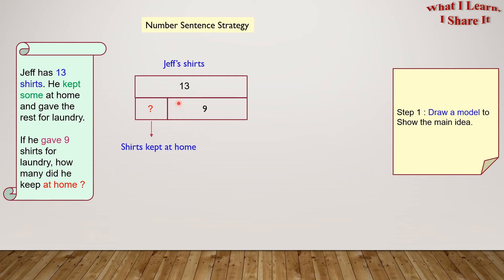On the other one, we have 9 shirts. And these are the shirts given for laundry. We put the number 9 in there, because we know how many shirts there are. We put a question mark in the other, because we don't know how many there are.